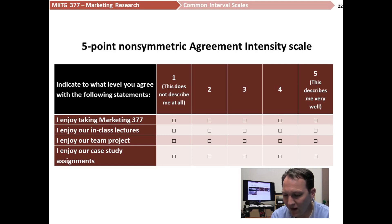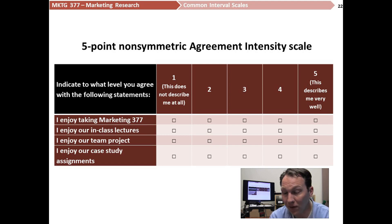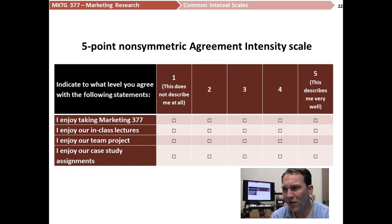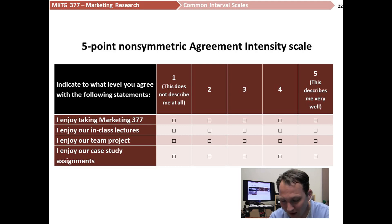This is a five-point non-symmetric agreement intensity scale — I usually just call these agreement scales because I use them quite commonly. I think they're easy for people to understand and easy to analyze. The prompt is: 'Indicate to what level you agree with the following statements,' on a scale of one to five, where one means 'this does not describe me at all' and five means 'this describes me very well.' For example: 'I enjoy taking Marketing 377' — I'm sure you'll all give it a five. 'I enjoy our in-class lectures' — hopefully a five as well. 'I enjoy our team project' — you might give that a four or three. 'I really enjoy our case study assignments' — I'm sure a lot of you would give it a six if that were on the scale.